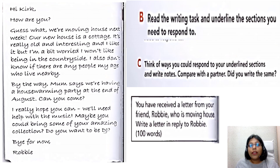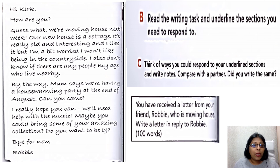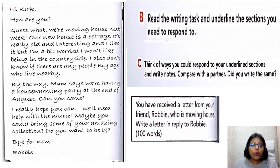Now let's read the writing task and underline the sections you need to respond to. Here is the informal letter from the textbook: 'Hi Kirk, how are you? Guess what — we are moving house next week! Our new house is a cottage. It's really old and interesting, and I like it, but I'm a bit worried I won't like being in the countryside. I also don't know if there are any people my age who live nearby. Mom says we are having a housewarming party at the end of August — can you come? I really hope you can. We'll need help with the music; maybe you could bring some of your amazing collection. Do you want to be DJ? Bye for now, Robbie.'